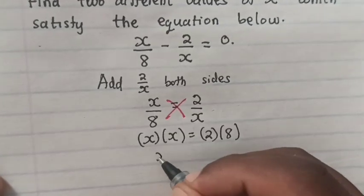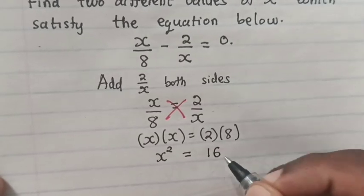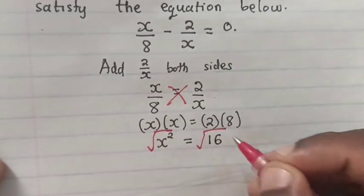So x times x is x squared, and 2 times 8 is 16. Then we find the square root on both sides.